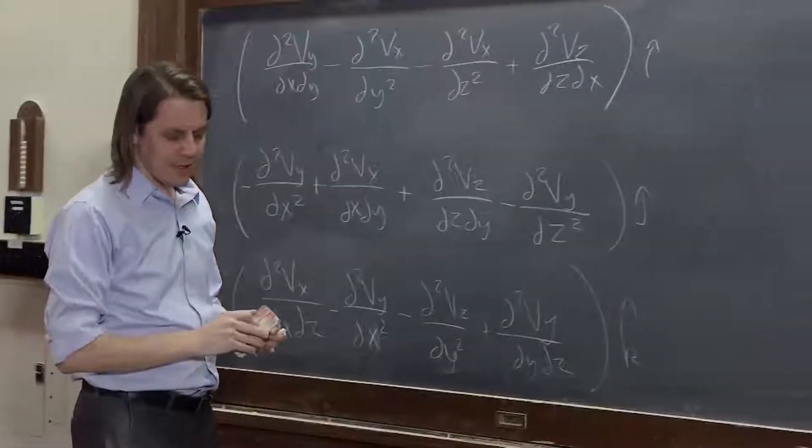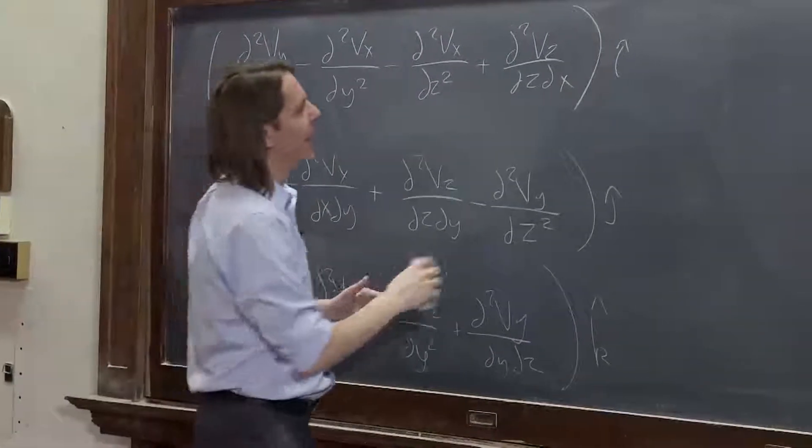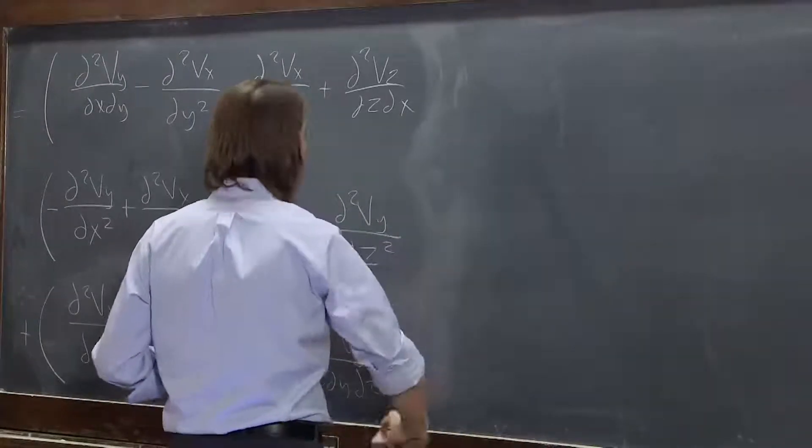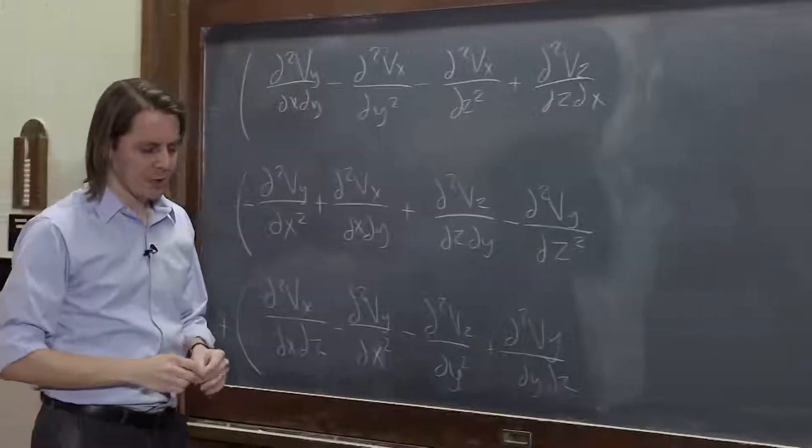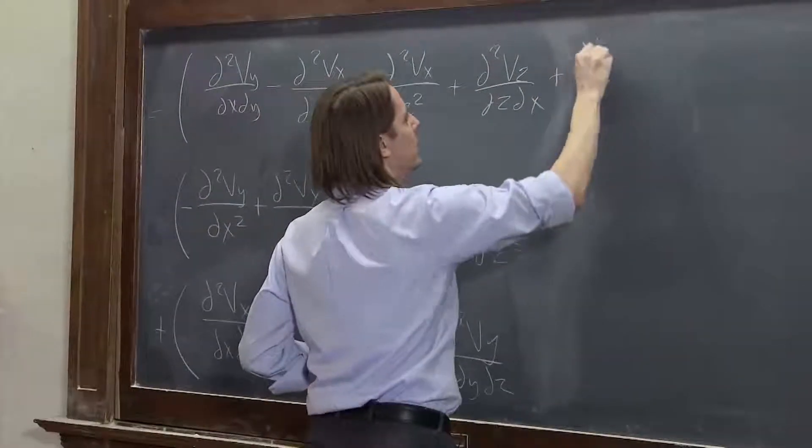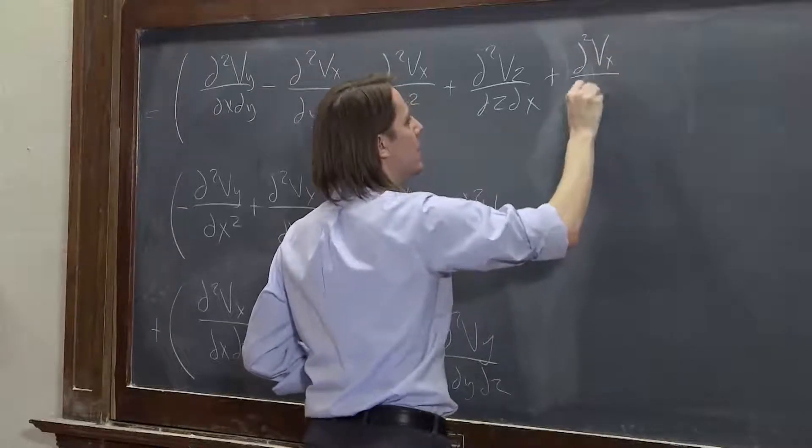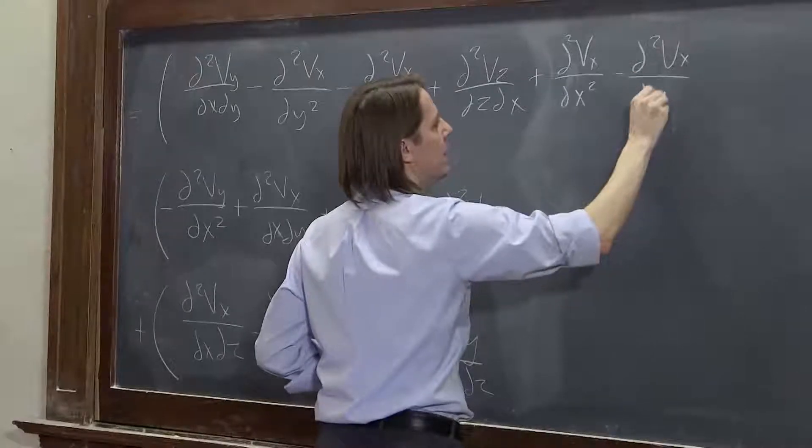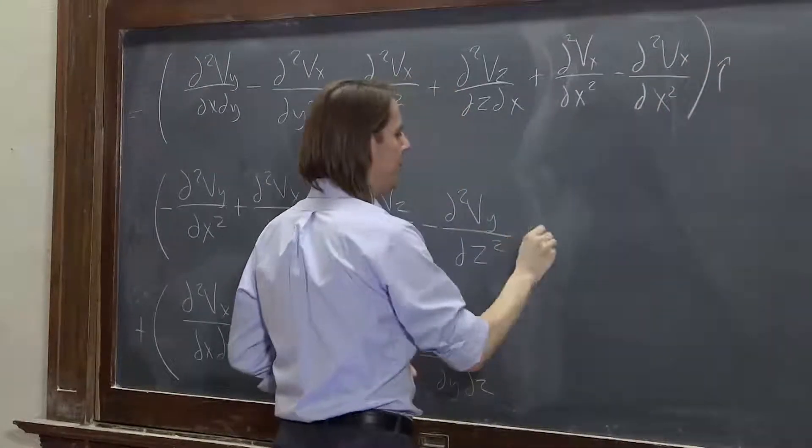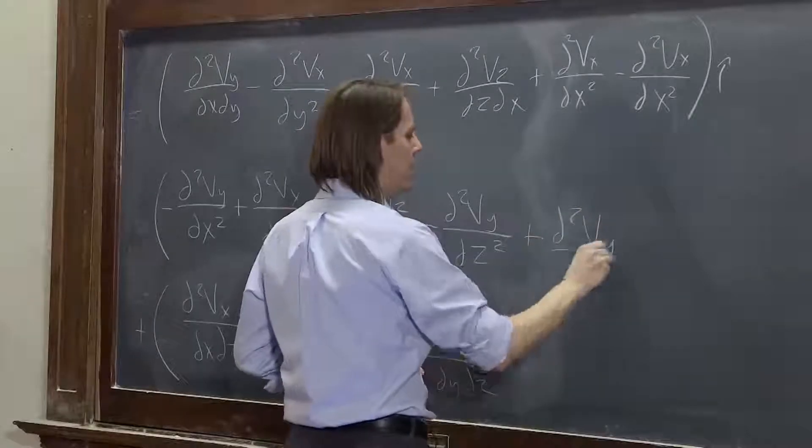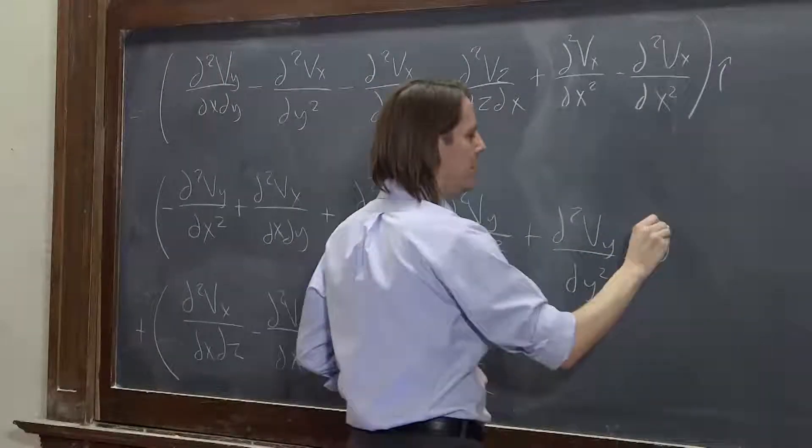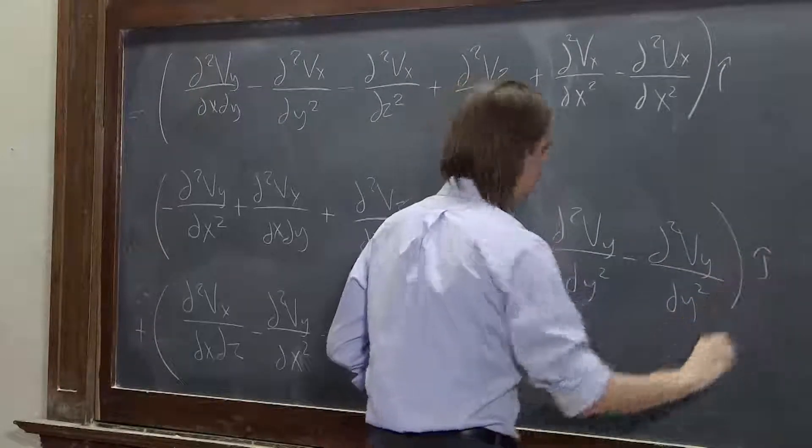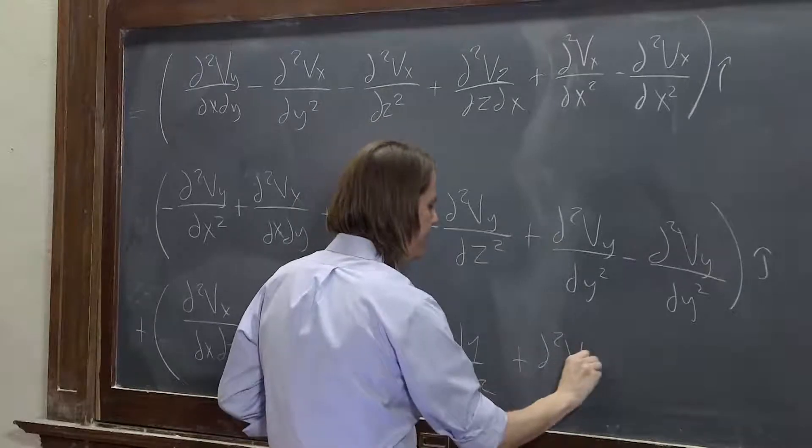Now, let's take each one and add and subtract the same number. This seems strange, but we do need to do it. So we're going to both add and subtract d²vx/dx² minus d²vx/dx² i-hat plus d²vy/dy² minus d²vy/dy² j-hat plus d²vz/dz² minus d²vz/dz² k-hat.